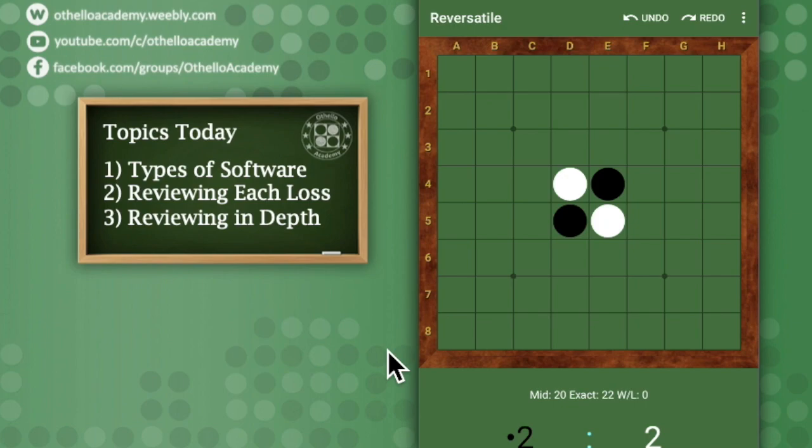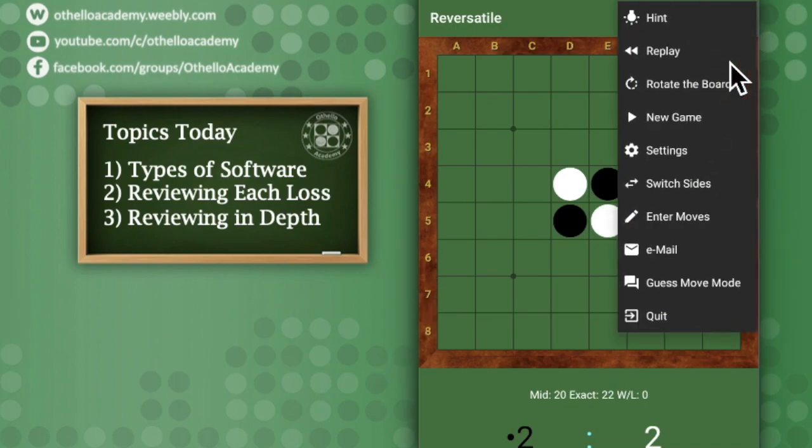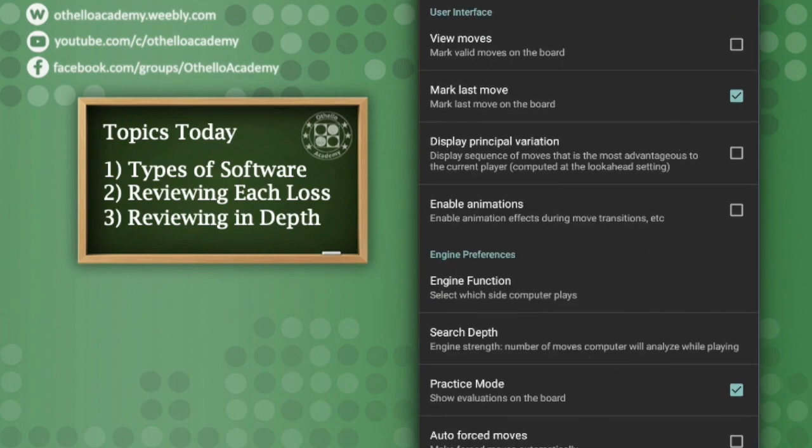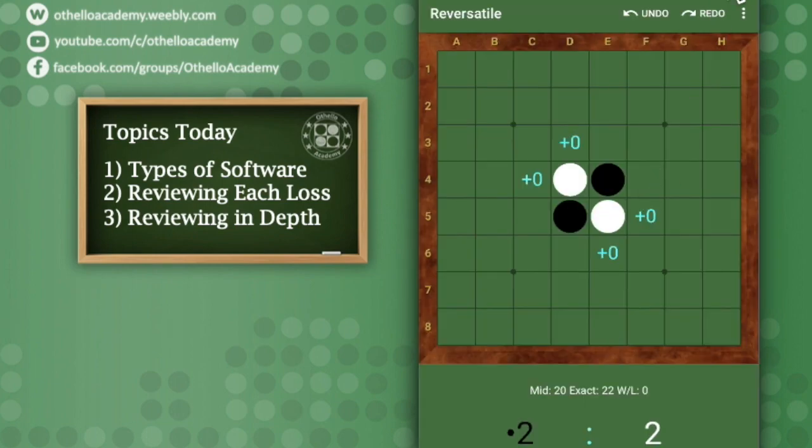That's the types of software that is available today. So when you use software to kind of review your game, let me just jump right into the practice mode. We'll just click on these settings and then we'll set it to practice mode. And then we'll go back to the screen.